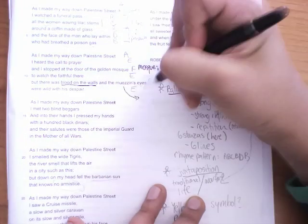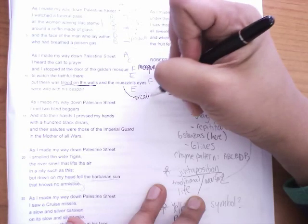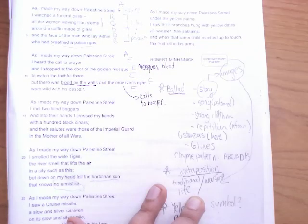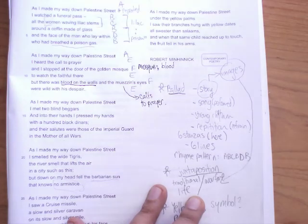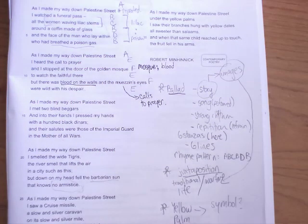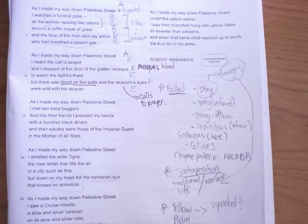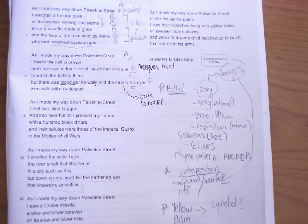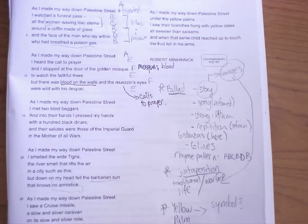Muzin is the person that calls to prayer. If you know anything about the Muslim religion, Islam, in mosques, there is someone who calls everyone to the prayer. His eyes are obviously wild with despair, possibly or probably because there's blood all over the walls of a religious house.